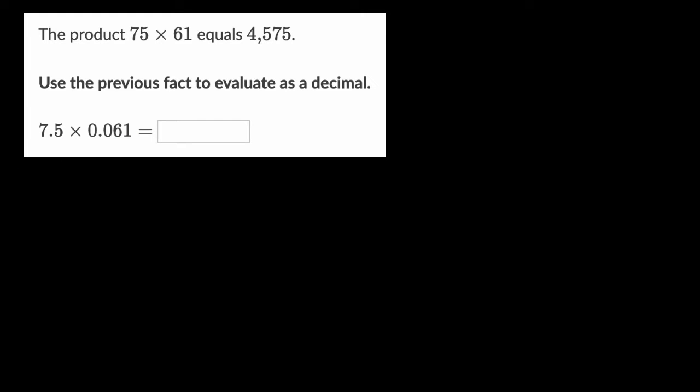All right, now let's do this together. The first thing you might realize is that 7.5 is the same thing as 75 divided by 10. And 0.061, this is 61 thousandths. This right over here is the same thing as 61 divided by 1,000. And we're gonna take the product of these two things.